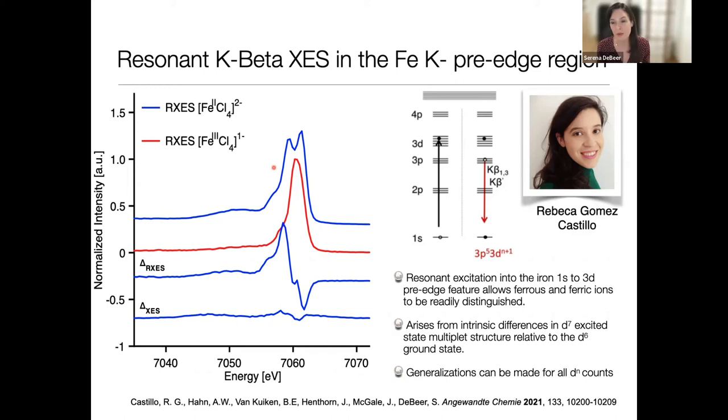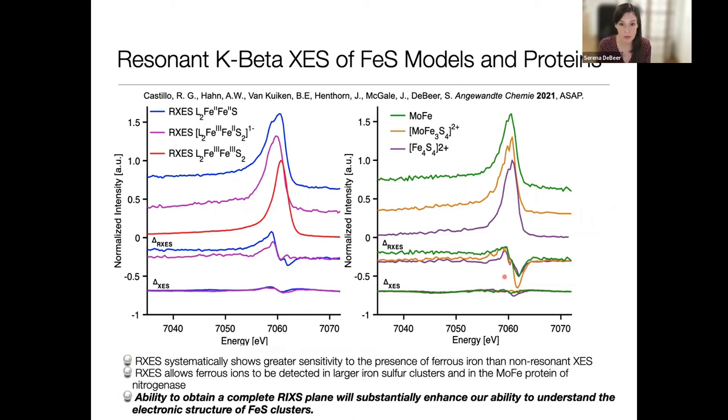Rebecca did this just by doing resonance at the pre-edge. She also has since looked at entire RIXS planes where we can get even more information, but I won't talk about that today. I wanted to highlight that you can make these generalizations for really any dn count and recover information that looks like it's lost. The other thing I wanted to point out - Rebecca, this needs to be updated because it can't be ASAP from last year. What Rebecca also did was apply this to iron-sulfur clusters and show again things that had no changes recovered in the resonance emission. She even applied this to nitrogenase. We're hopeful this is a way for us to take this a step forward and enhance our ability to get more detailed information about these.